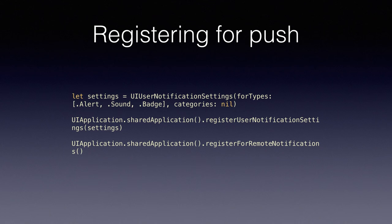This is what registering for push looks like in code — in Swift with the iOS 9 API with no categories for simplicity. In iOS 10 they moved a lot of the code out of UIApplication and into its own UNNotificationCenter class, which decluttered UIApplication. You can have multiple categories and register them all at once — you just have to do it once; you can't add categories dynamically.